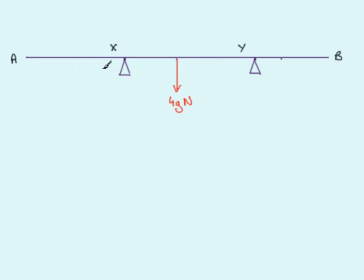Let's put some measurements on. We're told that A to X is two meters. Being a uniform rod of length six meters, the weight acts in the center, leaving one meter from the midpoint to the end. A to the second support Y is four and a half meters, so we need an extra 1.5 meters between the midpoint and Y.